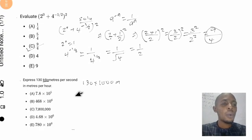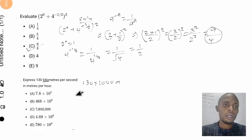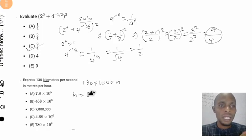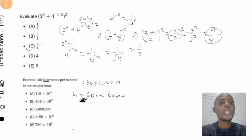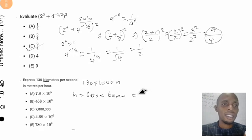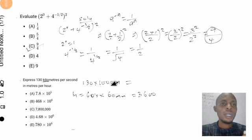To convert seconds to hours: we know that 60 seconds make one minute, and then from minutes to hours. To get one hour it equals 60 seconds multiplied by 60 minutes, giving us 60 times 60, which equals 3600. So one hour equals 3600 seconds.